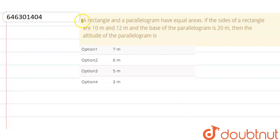Hello everyone, so our question is: a rectangle and parallelogram have equal areas. If the sides of the rectangle are 10 meter and 12 meter and the base of the parallelogram is 20 meter, then the altitude of parallelogram is.